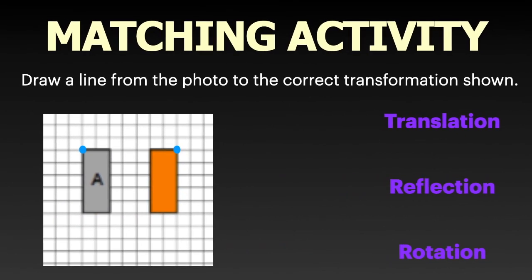Let's try a quick matching activity. Can you draw a line from the photo to the correct transformation shown? Remember: translation — slide, reflection — flip, rotation — turn. What did they do to get from figure A to the orange figure? If you said reflect, you are correct!